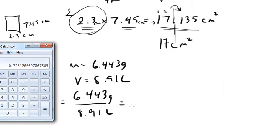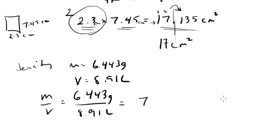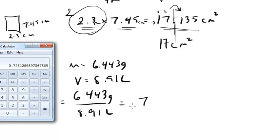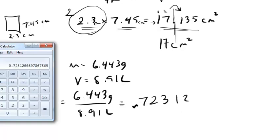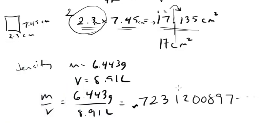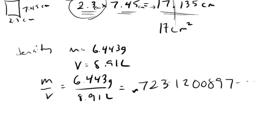So we're going to get 0.723120897, and it can go on for probably forever, right? Well where do we stop? Where do we round this off? Where do we truncate?